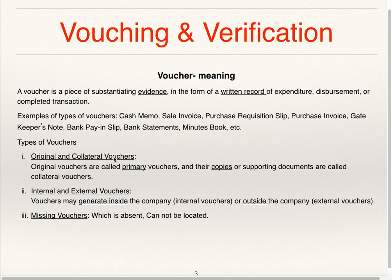Vouchers are of various types: original and collateral vouchers. Original vouchers are called primary vouchers and their copies — Xerox copies, that is photocopies — or supporting documents are called collateral vouchers. Internal vouchers are generated inside the company, and external vouchers are generated outside the company.